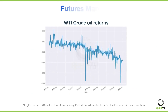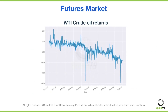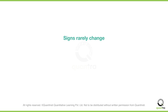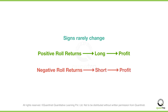Momentum trading is also very prevalent in the futures market, and many commodities traders are trend followers. Can you guess the reason for that? This is due to the persistence of roll returns. In the futures market, the roll return is the difference between futures returns and spot returns. And for a long period of time, the sign of roll returns doesn't change. So if roll returns are positive, then you simply go long and profit from it. And similarly, if the roll returns are negative, you can short it.